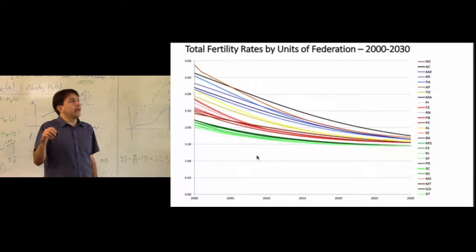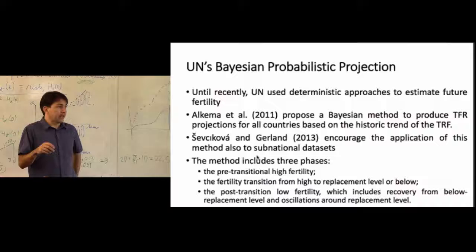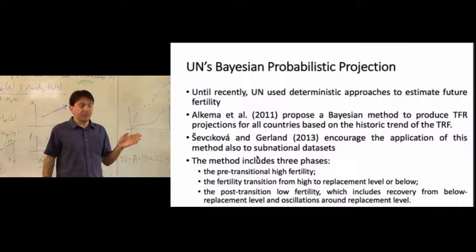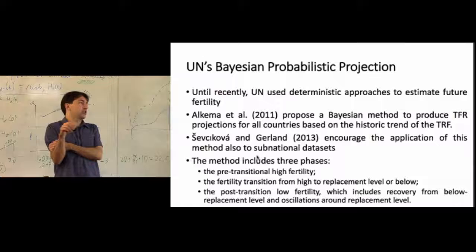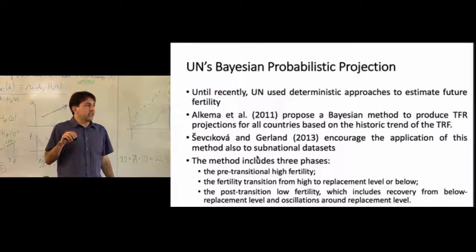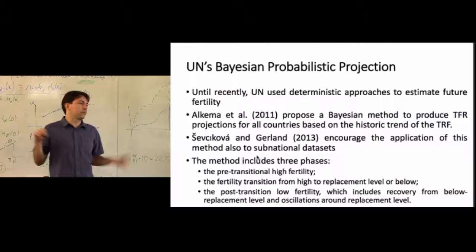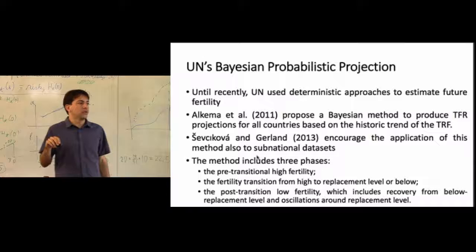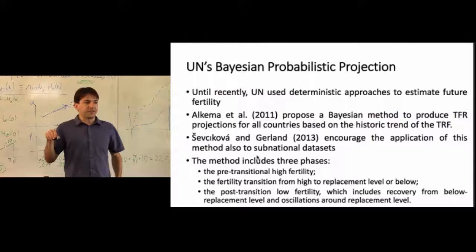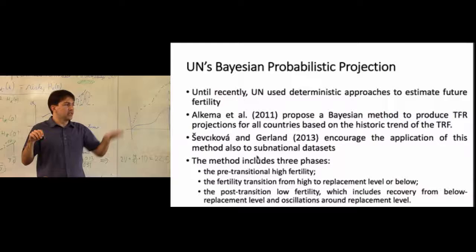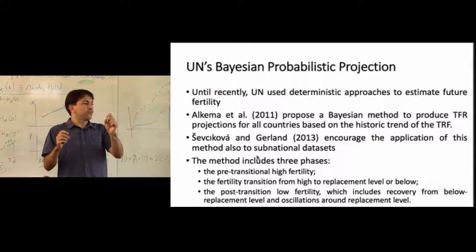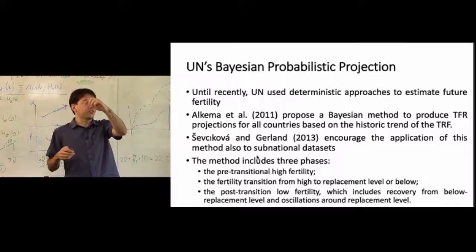The United Nations Bayesian probabilistic projection method was proposed in 2011 and has been used for the last two revisions. This paper encourages its application for subnational datasets, which is what I'm doing here. The method includes three phases: pre-transitional high fertility, fertility transition from high to replacement level or below, and post-transitional low fertility. For Brazil, we are most interested in the transition phase, since we haven't yet observed a recovery of fertility after the decline.